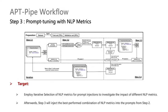Moving to Step 3, the pipeline engages in an iterative selection process for NLP metrics, investigating their impact on prompt injections. Once the best-performed combination of NLP metrics is identified, they are injected into the prompts from Step 2, yielding fine-tuned prompts.